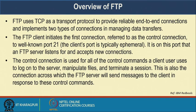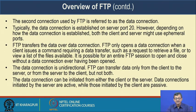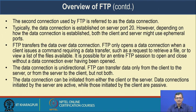The control connection is used for all control commands: client-server log-on, file manipulation, session termination, etc. This is also the connection across which the FTP server sends messages to the client in response to control commands. The second FTP connection is the data connection, typically established on port 20. However, depending on how the data connection is established, both client and server might use an ephemeral port agreed upon between them.